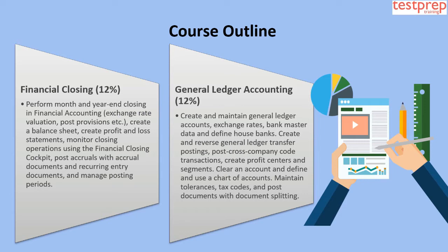Domain 2: General Ledger Accounting, which comprises 12% weightage in the exam. This covers creating and maintaining general ledger accounts, exchange rates, bank master data, and defining house banks. Create and reverse general ledger transfer postings, post cross-company code transactions, create profit centers and segments, clear an account, and define and use a chart of accounts. Maintain tolerances, tax codes, and post documents with document splitting.